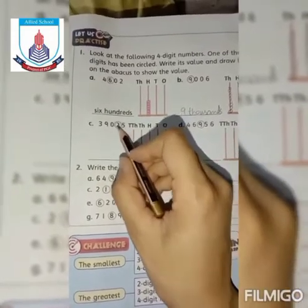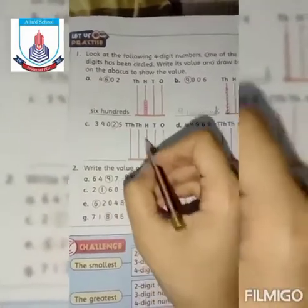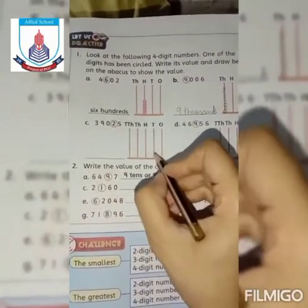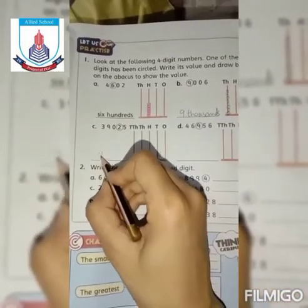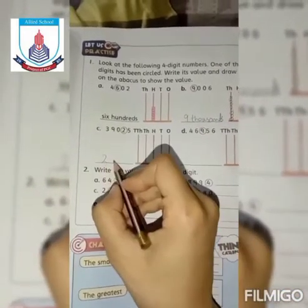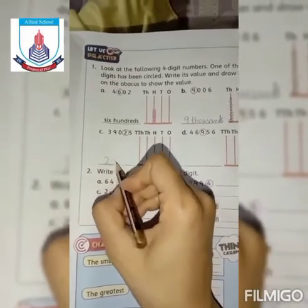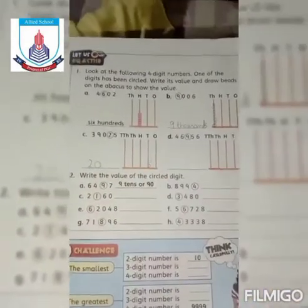Ye 1s, 10s - 10s wali jagah pe hai, to aap 2 beads draw karenge aur 10s pe hai to ye, it means 2 tens. Ye 20 - 20 bhi likh sakte hai, 2 tens bhi likh sakte hai. Aapki marzi hai students.